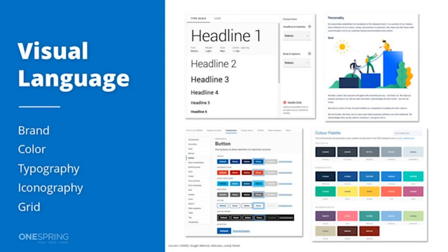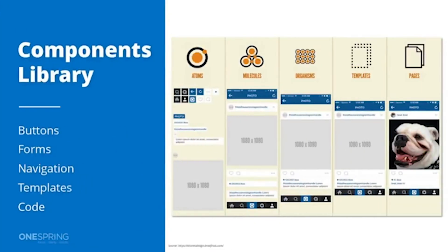You can see examples from the U.S. Web Design System around button styles and typography, from Google Material, from Atlassian on brand personality and color palette showing primary and secondary colors, and from Lonely Planet's design system.